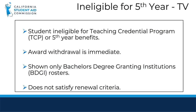TV — Use the TV code to report when a student is ineligible for fifth year benefits in a teaching credential program. The award withdrawal is immediate. Only bachelor degree granting institutions will see this adjustment code on their rosters under the adjustment code drop-down menu. This code does not satisfy the renewal criteria.